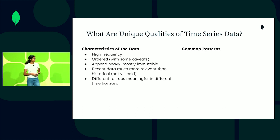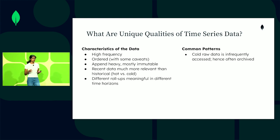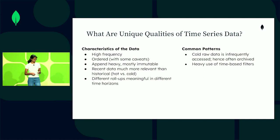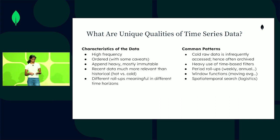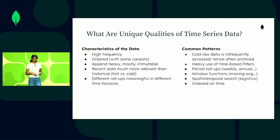Let's get into some patterns of time series data. Hot data is queried a lot more often; cold data is infrequently accessed and often archived. There's typically a heavy use of time-based filters. Periodic roll-ups are common — weekly, annually. Window functions are often used — calculating things like the moving average, running sum, or year-over-year change. Spatio-temporal search may be used. The data is indexed on time as the primary dimension and is associated with other dimensions like a sensor ID. And the data may be used for monitoring, forecasting, or anomaly detection.